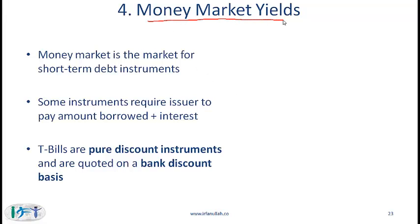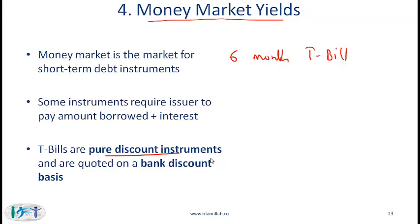We'll now talk about money market yields. Money market is the market for short-term debt instruments. The most common short-term debt instrument in most markets is a six-month government T-bill. This is an example of a pure discount instrument — when the government issues a six-month T-bill, it says that at the end of six months it will pay back $1,000, and the amount that the government collects initially might be $950.